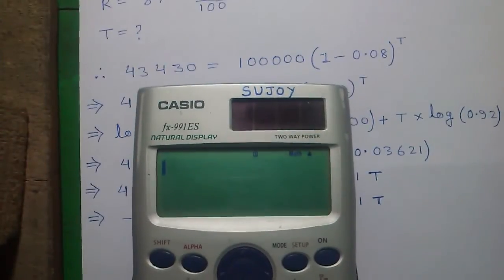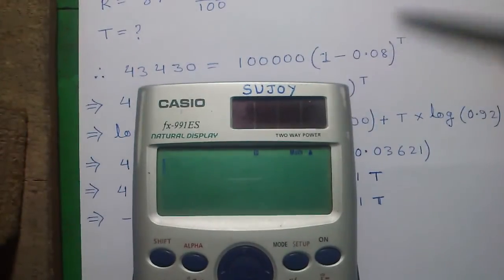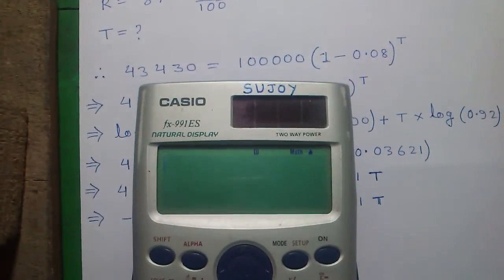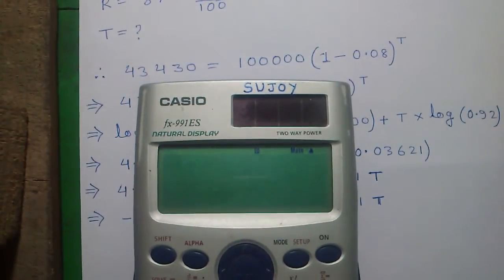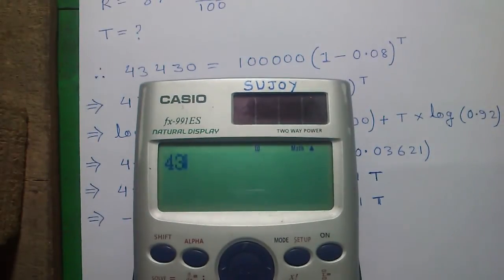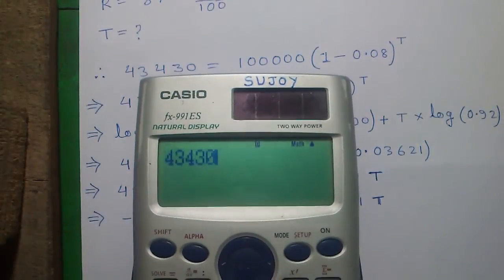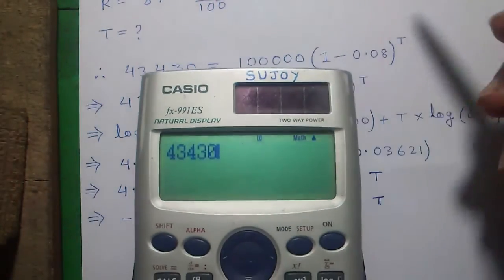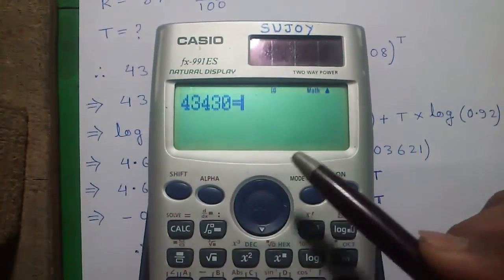And now I will tell you how to do this mathematics directly on this calculator. For that we will program it. 43,430 equals to, press alpha and the calc button.